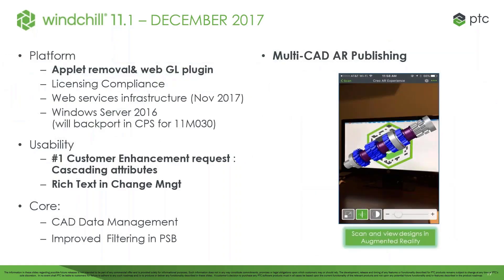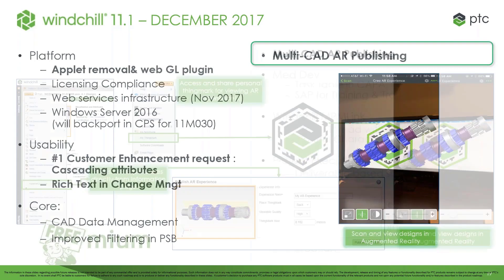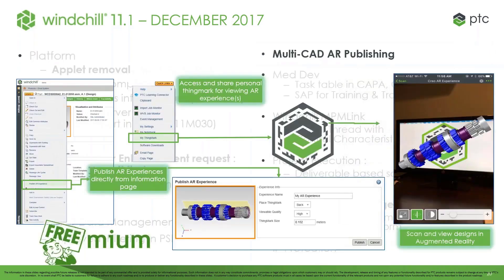The final improvement I'm going to cover is the ability for multi-CAD augmented reality publishing. You can take any parts you have within Windchill and publish those as AR experiences. You save that part to the cloud, and from there, anyone with the Vuforia View (V4) app — a free application — will have the ability to access that visualization through a Thing Mark within your Windchill system. Thing Marks are simply PTC-branded QR codes. It's a progressive save, so as you continuously save, it will overwrite your oldest QR codes.